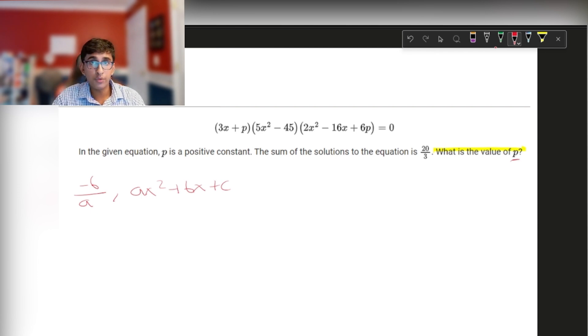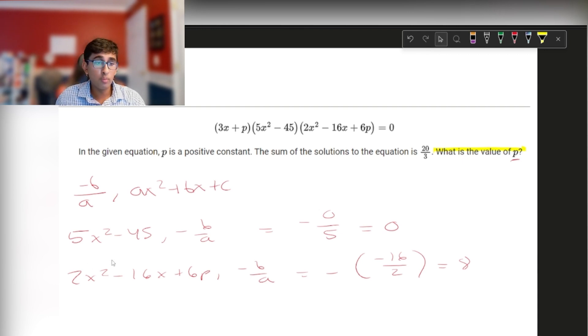Looking at the first part, 3x plus p is not in quadratic form. That is a linear component. 5x squared minus 45, that's a quadratic, and 2x squared minus 16x plus 6p, also a quadratic. So let's use negative b over a. 5x squared minus 45, negative b over a, would just equal negative 0 over 5, which is simply 0. Now for 2x squared minus 16x plus 6p, if we do negative b over a, we get negative negative 16 over 2. And so that's negative negative 8, which is 8.